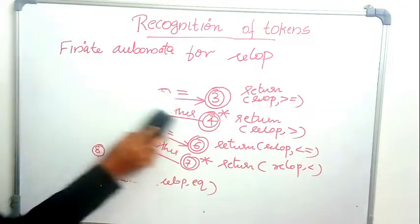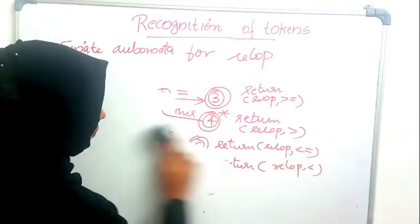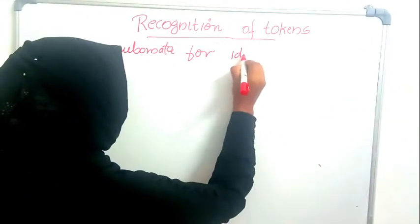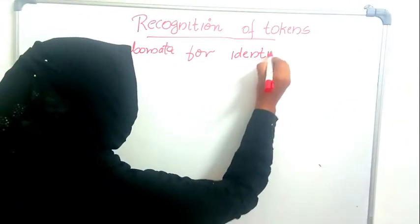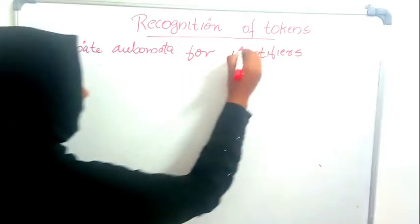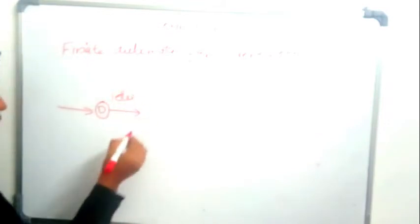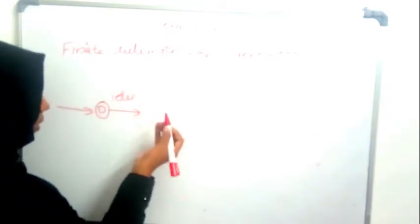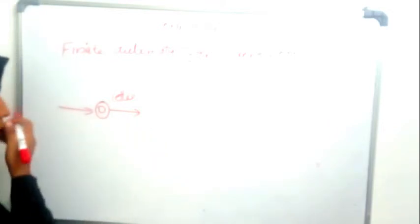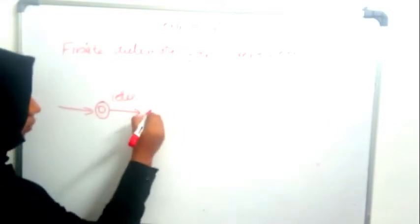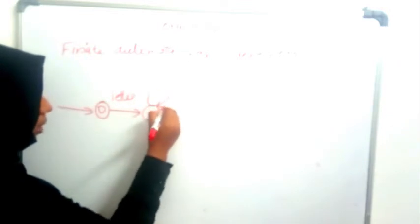Now we will see the automaton for identifiers. For an identifier, the first thing expected is a letter. An identifier can be up to 32 characters long or even more in some programming languages, so it can have any number of letters or digits following the initial letter.